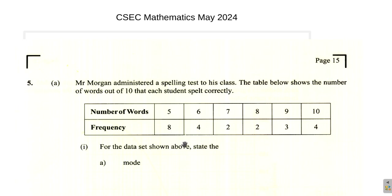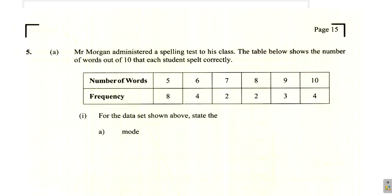The mode will be the category that occurs more often than the others. Remember, frequency here is the number of students. So 5 words were spelled correctly 8 times, 6 correct words occurred 4 times, 7 words were spelled 2 times, 8 words were spelled 2 times, 9 words were spelled correctly 3 times, and 10 words were spelled correctly 4 times. Mode is the one that occurs most frequently, so the mode would be 5 words.